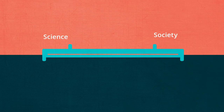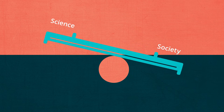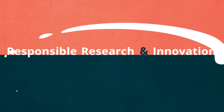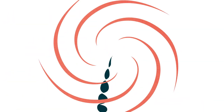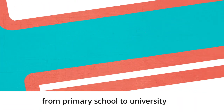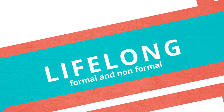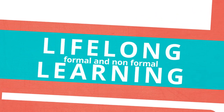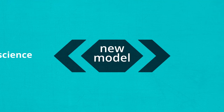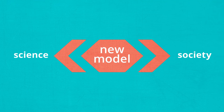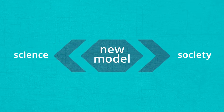All these issues highlight the need to build a new relationship between science and society and to articulate a new science education. The responsible research innovation approach can help with this. Not only formal education at all levels, from primary school to university, but also lifelong and non-formal and informal learning contexts can profit from this new approach. We need a new model where science is well understood by society, and society can talk back to science in a two-way communication.